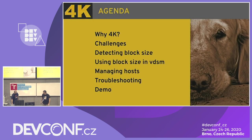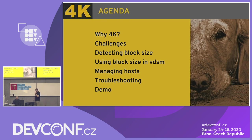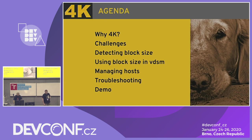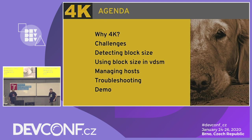Today we'll talk about supporting 4K drives in oVirt. First we'll understand why we need to support this, and then we'll dive into the challenges of trying to support 4K in a legacy project that was started more than 10 years ago. We'll focus on detecting block size of the storage, how VDSM uses it to create storage domains, and how the engine uses what VDSM reports to manage hosts with different capabilities. Finally we'll look at some troubleshooting tips and hopefully a live demo creating 4K storage.